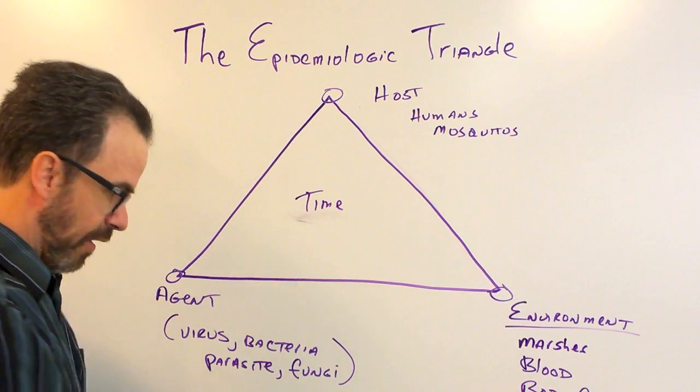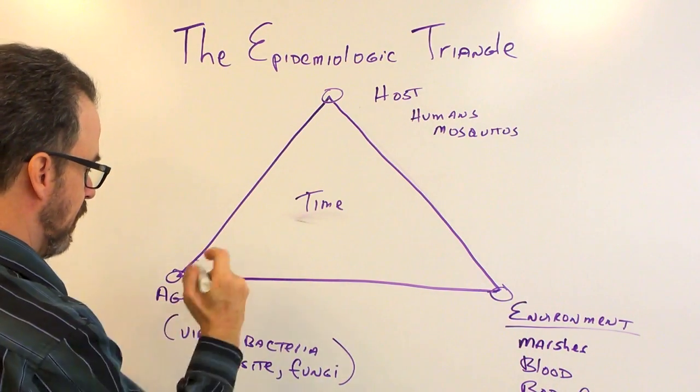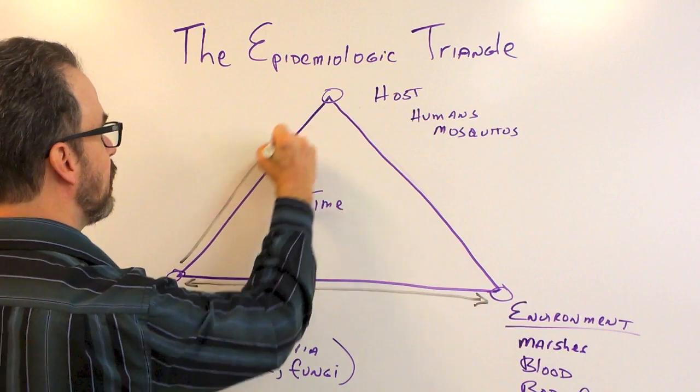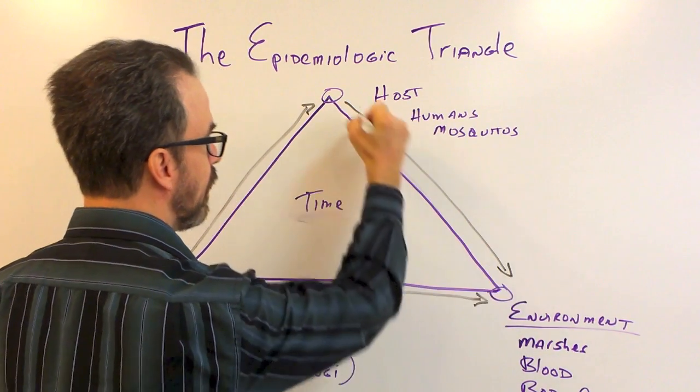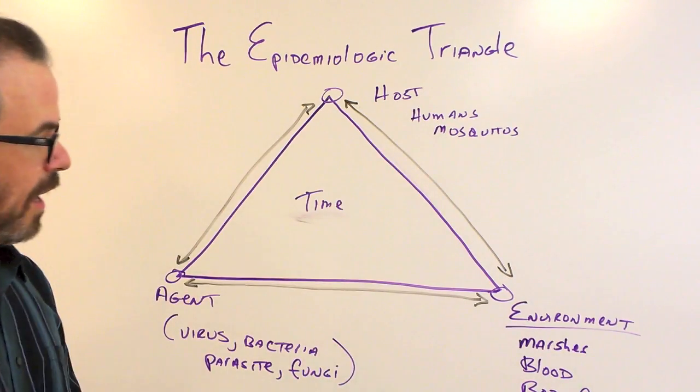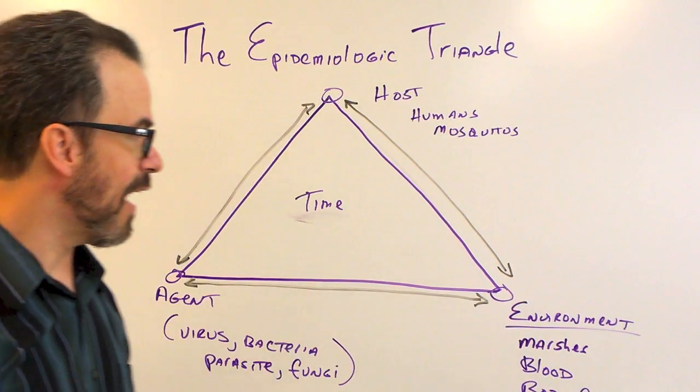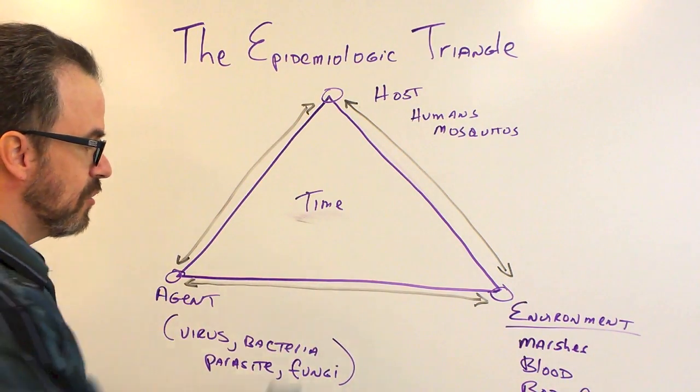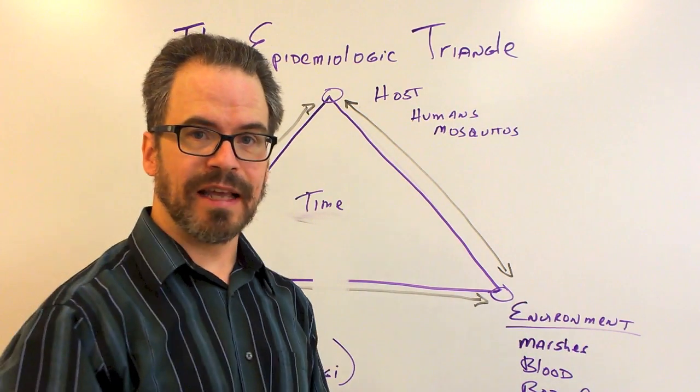And all these angles are connected to each other. All these vertices are connected to the triangle. And all it takes, if you're an epidemiologist, once you have this whole triangle figured out, all it takes to really solve a public health problem is to bisect one of these angles. And by bisecting one of these angles, you stop the disease.